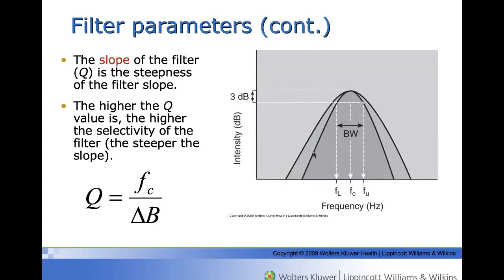The selectivity of the filter shown by the steepness of the filter slope is characterized by the quality factor, Q. The higher the Q value is, the higher the selectivity of the filter. Q is defined as the ratio of the resonance center frequency to the bandwidth of the curve.